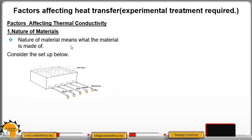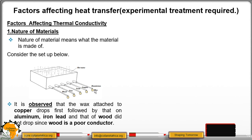Looking at the setup we have here, we have a container with hot water, and several rods of different materials attached to it. At the end of each rod, there is wax fixed. We observe which wax falls first. The wax attached to copper drops first, followed by that of aluminium, then iron, then lead, and finally the wax attached to wood did not drop, because wood is a poor conductor of heat.